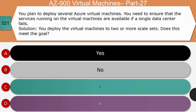Question 1: You plan to deploy several Azure virtual machines. You need to ensure that the services running on the VMs are available if a single data center fails. Solution: you apply the virtual machines to two or more scale sets. Does that meet the goal? The right answer is no. The solution does not specify that the scale set will be configured across multiple data centers, so this solution does not meet the goal.